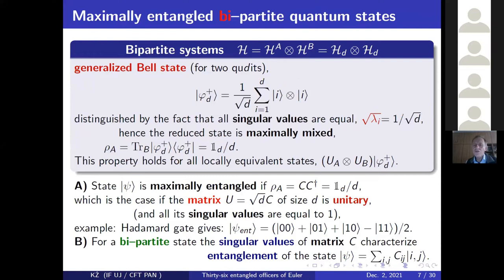We can easily generalize this setup for higher dimensions. If I have two qudits, so two subsystems of size d, I define the generalized Bell states. Look, it consists of a sum of d terms with the same pre-factor, so it means that all singular values lambda are equal, they are just one over d. So then this state is maximally entangled because the reduced state, so partial trace is maximally mixed. By the way, look at this state.